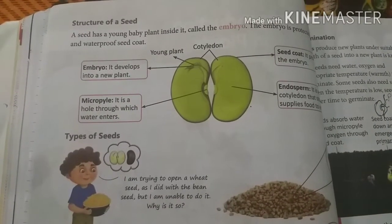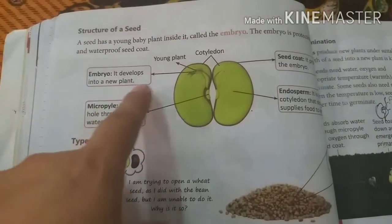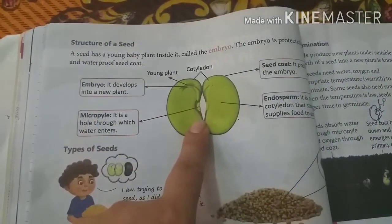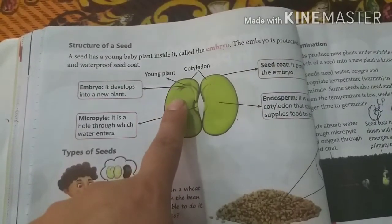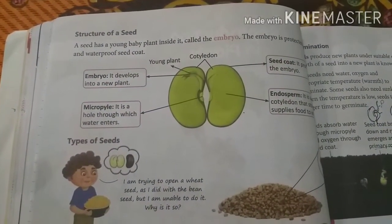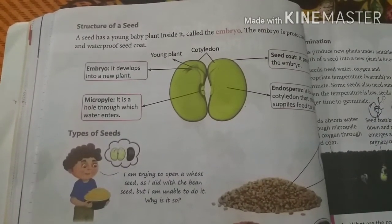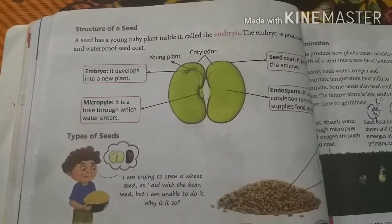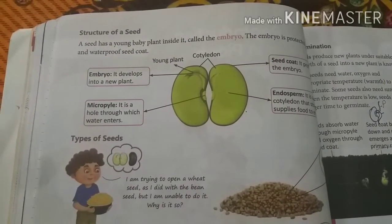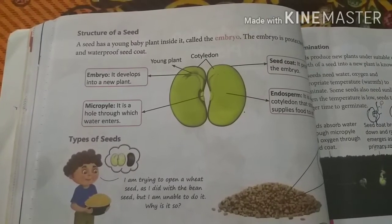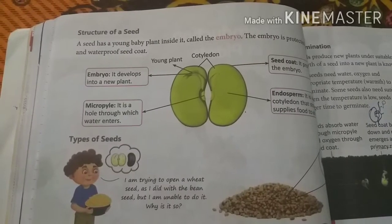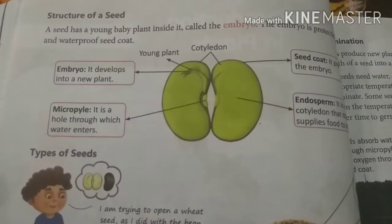Inside the seed there is a small plant called a young plant or embryo. The seed also has two leaves or cotyledons. The seed coat protects the seed from the environment. The endosperm provides food to the young plant. So this is the structure of a seed.